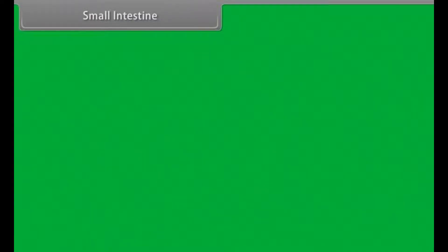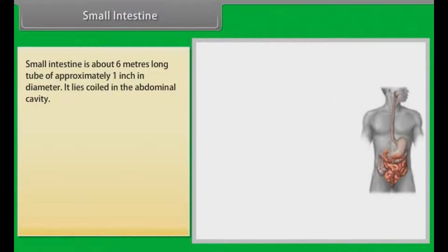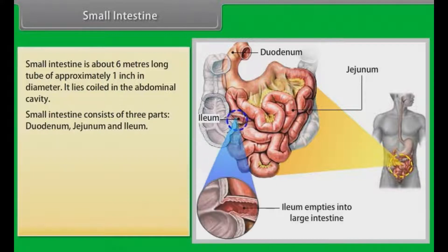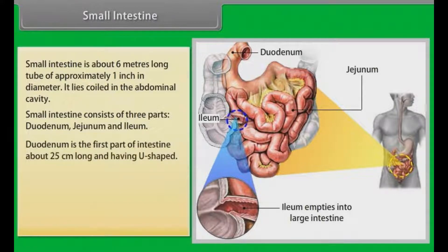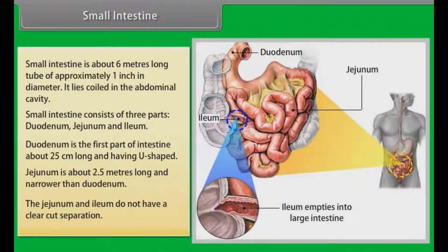Small intestine is about 6 meters long and approximately 1 inch in diameter. It lies coiled in the abdominal cavity. Small intestine consists of three parts: duodenum, which is the first part about 25 centimeters long and U-shaped; jejunum, which is about 2.5 meters long and narrower than duodenum; and ileum. The jejunum and ileum do not have a clear-cut separation.